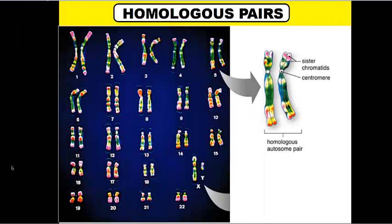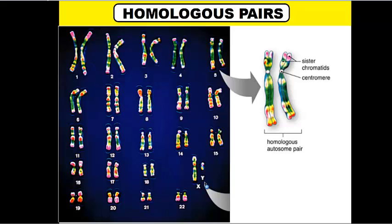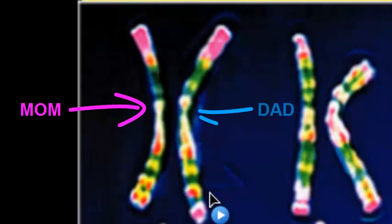The first thing you have to understand about meiosis is the idea of homologous pairs. Humans have 23 pairs of chromosomes for a total of 46, and here you can see the 23 groupings or pairs of chromosomes that we have. The reason why our chromosomes come in pairs is because you get one half of each set from your mom and one half of each set from your dad. You get the same chromosomes from your mom as from your dad, but they have different genetic information for the same traits.